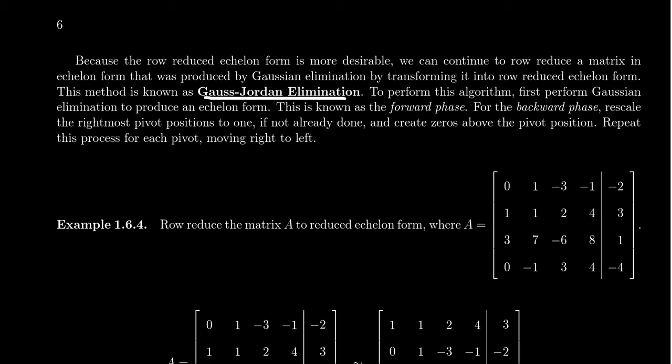Gauss-Jordan elimination comes in two phases. The first is the forward phase and the second is the backwards phase. The forward phase is essentially just Gaussian elimination — you row reduce the matrix until it's in echelon form, always focusing on getting zeros below the pivots, working left to right. The backwards phase works similarly, but we rescale our pivots to be 1 and then make zeros above the pivot positions, working right to left — hence forward and backwards.